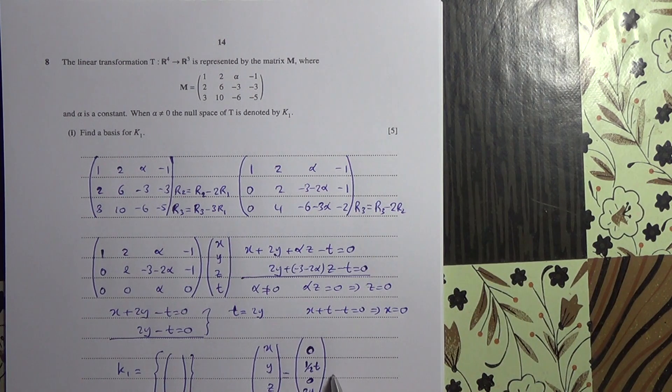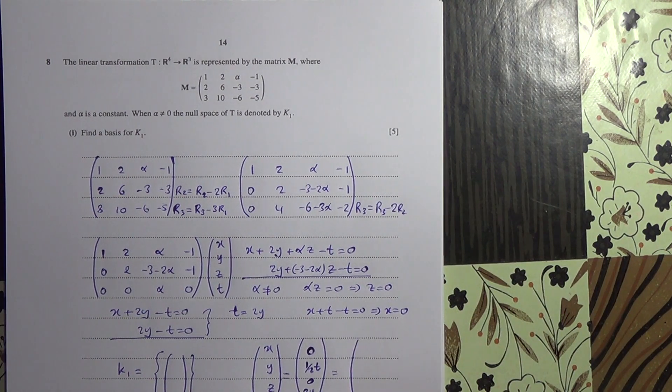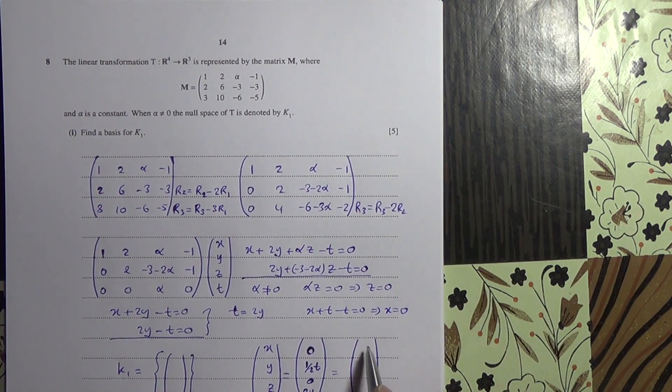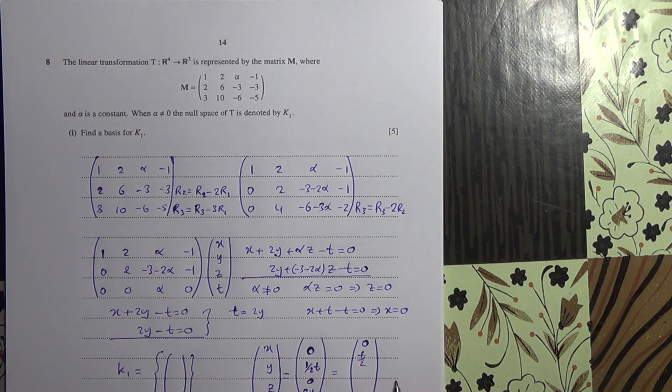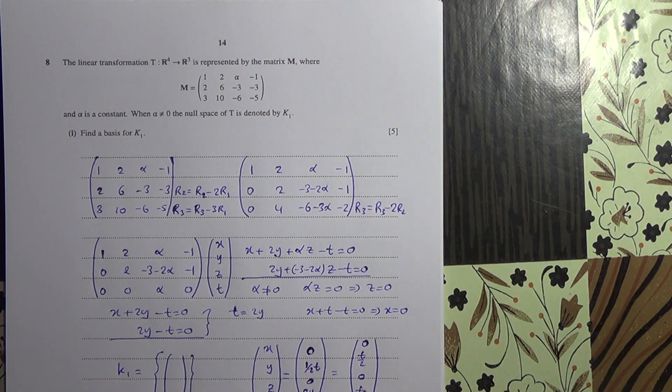So what we're saying is that it's going to be equal to 0, T over 2, 0, and what is 2Y? 2Y is T, basically.